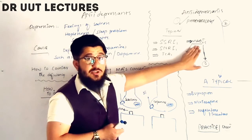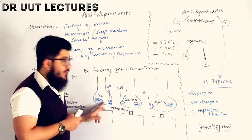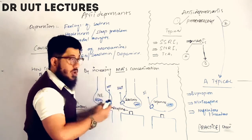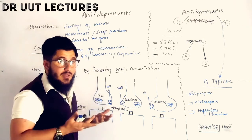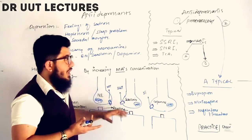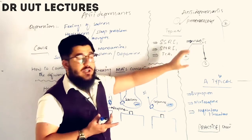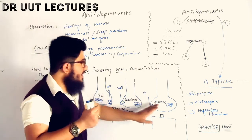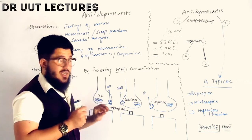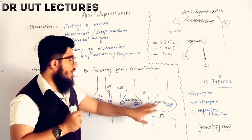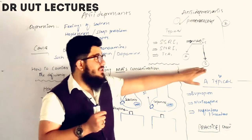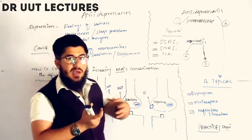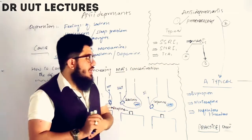The next class is MAOIs — Monoamine Oxidase Inhibitors. These drugs inhibit the MAO enzyme, so norepinephrine, serotonin, and dopamine are no longer broken down. This increases monoamine concentration in the neurons, making sufficient amounts available to be released into the synapse. MAO exists in two types: Type A is found in norepinephrine, serotonin, and dopamine nerve endings, the GIT, and the liver. Type B is found predominantly in dopamine neurons and is more concentrated in the brain, though it is also present in the liver.